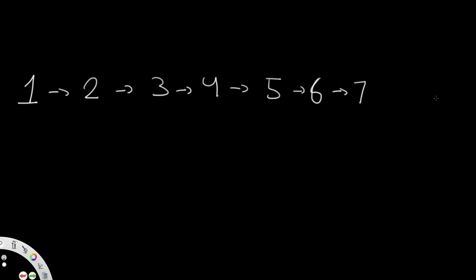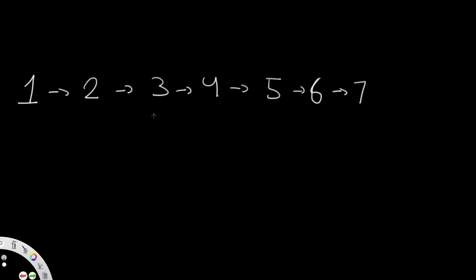But if this was a cycle, what would happen is this value might end up pointing to some other value. Let's say seven, instead of pointing to null, is actually going to point to the number three. So seven now has a pointer going all the way back to three. Basically we go one, two, three, four, five, six, seven, then from seven we go to three again, then four, five, six, seven, and three — there's an infinite cycle that keeps going on and on.